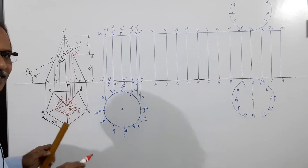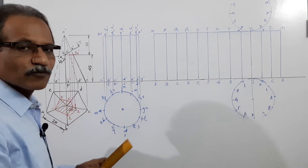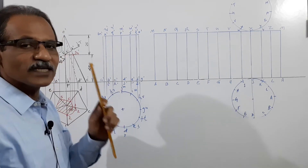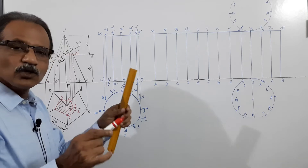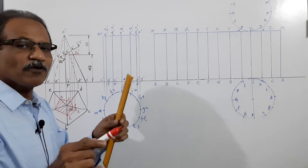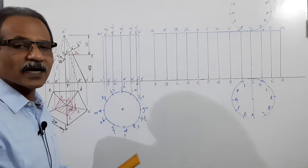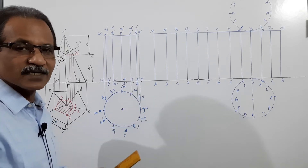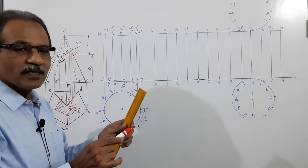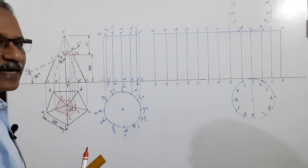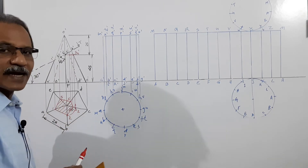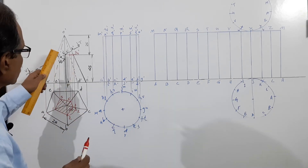Hatching lines are drawn at 45 degrees to the XY line, 1 to 1.5 millimeters apart for the best appearance. This completes the sectional plan.